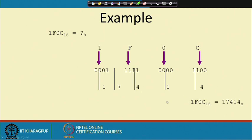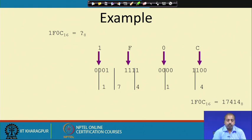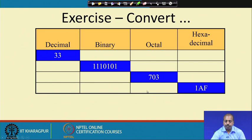This way we can convert very easily between octal and hexadecimal number systems using the binary number system as the intermediary. Otherwise, we'd have to convert to decimal by multiplying by powers of 8 or 16, and then divide by powers of 16 or 8 respectively for the reverse conversion.